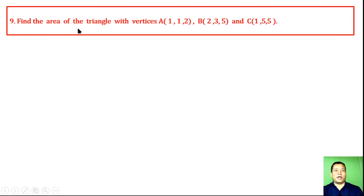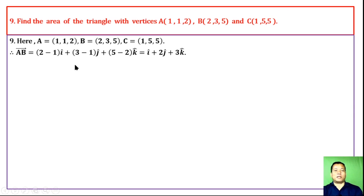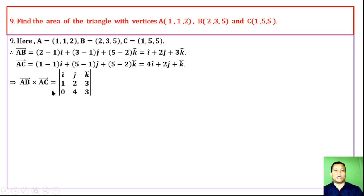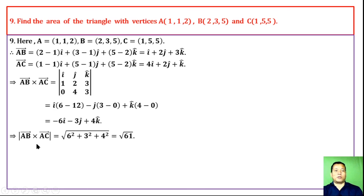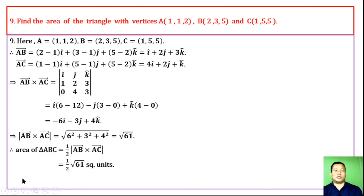Question 9: Find the area of the triangle with vertices A, B, C. Compute vectors AB and AC. Then find the cross product AB cross AC by expanding the determinant. The magnitude of AB cross AC is √61. Therefore the area of triangle ABC = half × |AB cross AC| = (√61)/2 square units.